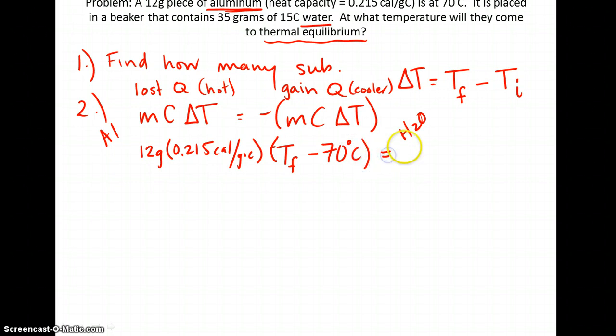Now I make that equal to my negative. And this here, in terms of water, I have 35 grams of water. I know water is 1 cal per gram C. Then I am looking here for its final temperature as well. Remember, it started as being 15 degrees Celsius. I'm going to add one more there. And now we want to see what it is.